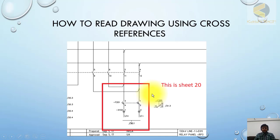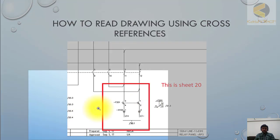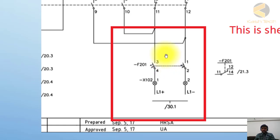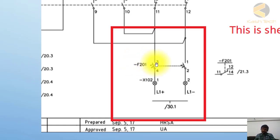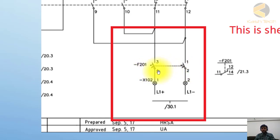On sheet 20, you can see there is an MCB. The terminal blocks are X1021 and X102. MCB F201's terminals 3 and 4 are shown. The thumb rule in drawings is that odd numbers are for incoming power circuits or cables, and even numbers are for outgoing or terminated circuits.